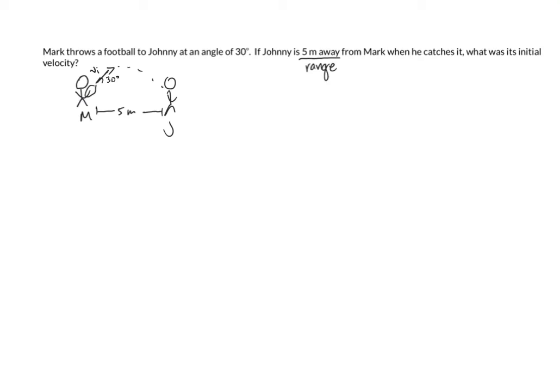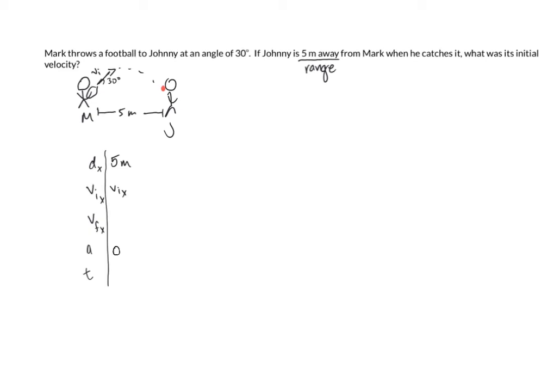Now, we're going to start by filling out our table for the x direction. So at that point, we have our displacement in the x direction, an initial velocity, a final velocity, an acceleration, and a time. So our displacement in the x direction is going to be 5 meters. Our initial velocity in the x direction is what we want to find. And I'm going to also go ahead and put in the acceleration, which is 0, and put in t as my air time, which you hopefully remember from step 5.